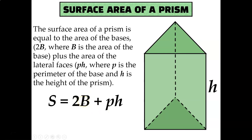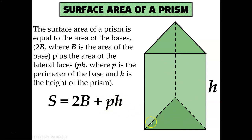The 2B part of this formula is the area of both of the bases — finding the area of each triangular base. Since those bases are congruent to each other, you really only need to find the area of one of them and then multiply by 2. Then you add the perimeter of the base times the height of the prism. The perimeter of the base is all three side lengths added together, multiplied by the height, which gives you the area of each of the three rectangles wrapping around the two triangular bases.